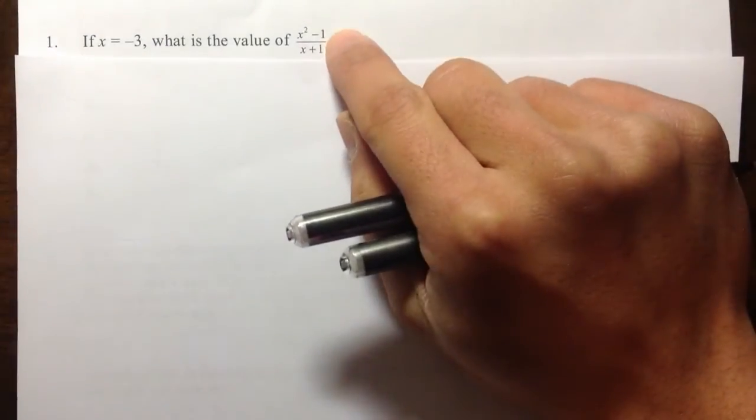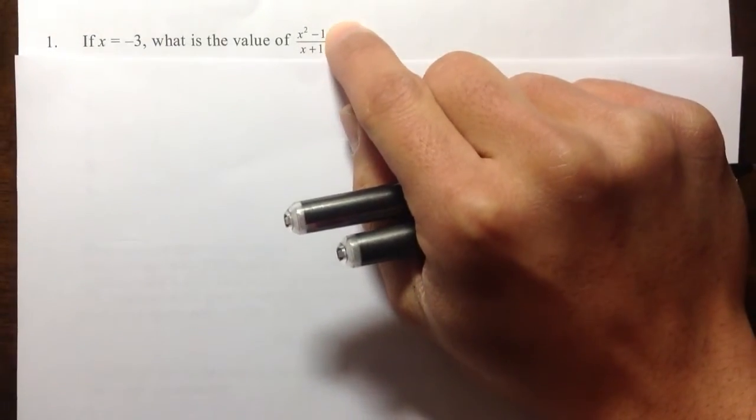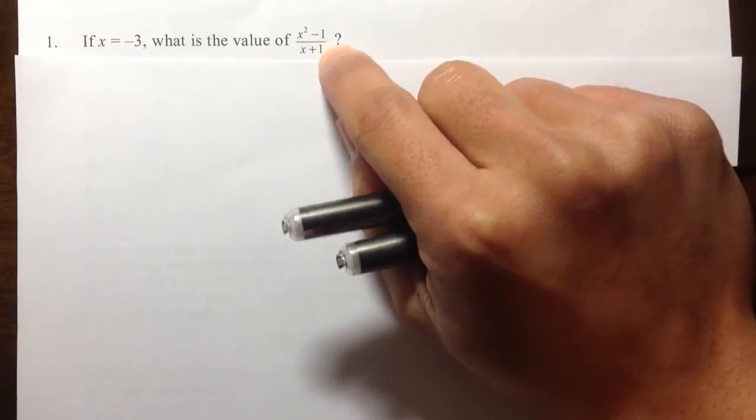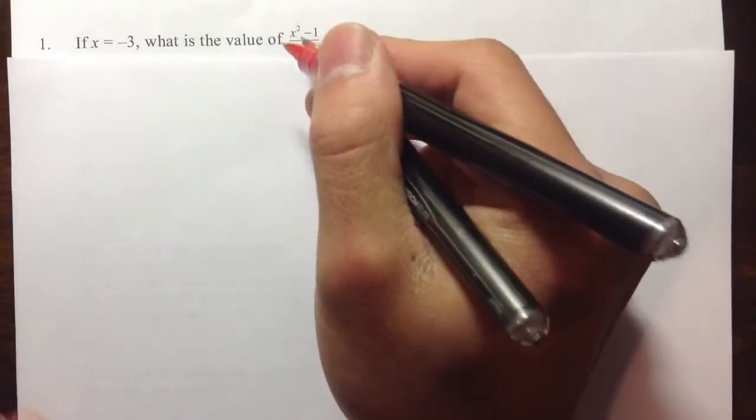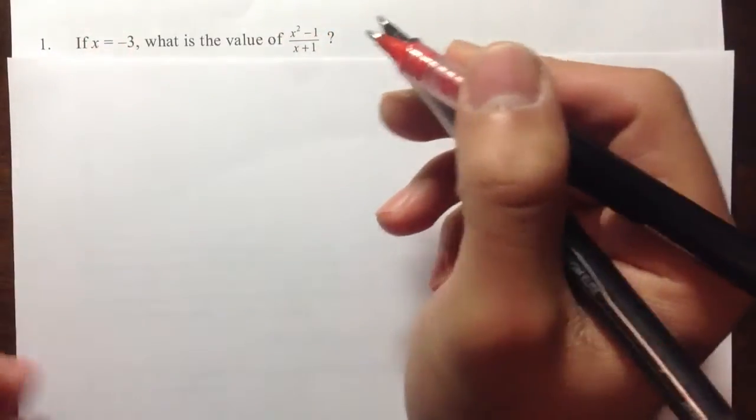Question number one. We're trying to figure out what's the value of x squared minus 1 over x plus 1 when x is equal to negative 3. So what we need to do is just plug in negative 3 into all the x's and then do the calculation.